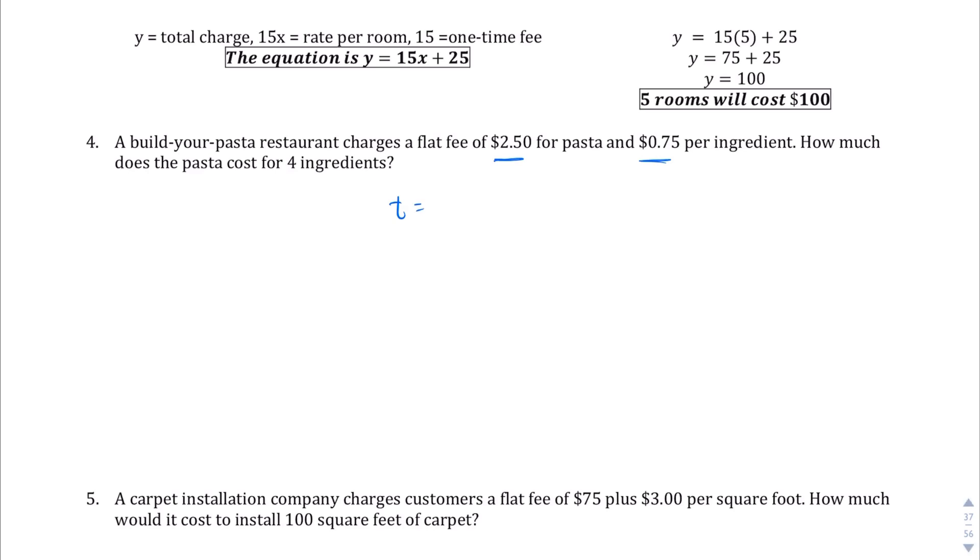The total, I'm going to keep going with the variable T. The total is going to be the flat fee of $2.50. So no matter what, you're going to get charged $2.50. And then you're going to be charged $0.75 for every ingredient. So I'm going to write I for the ingredient. How much does it cost for four ingredients? So all we have to do is, instead of the ingredients I, we're going to plug in four.